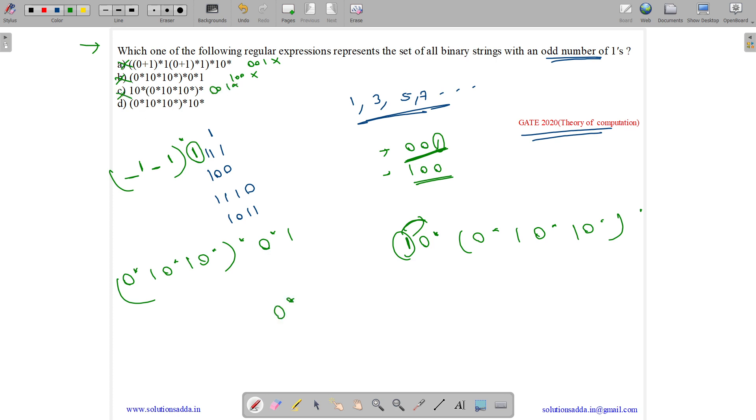Option D is 0 star, 1, 0 star, 1, 0 star, whole star, 1, 0 star and we need to generate 001. See.